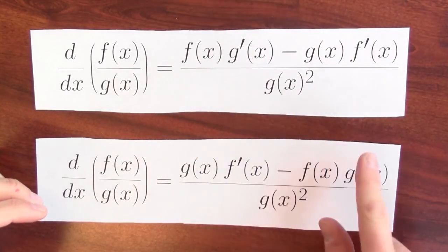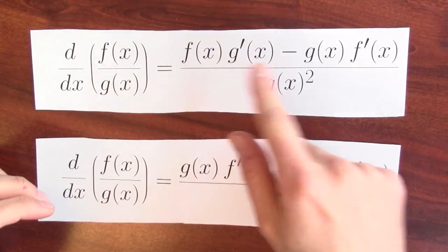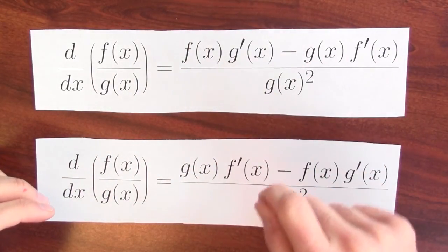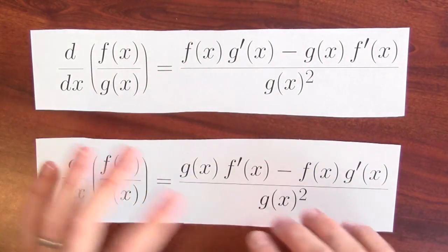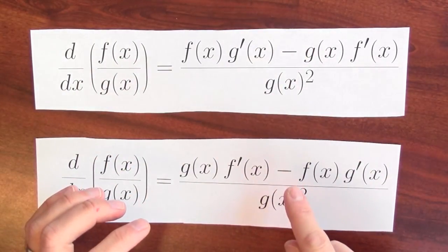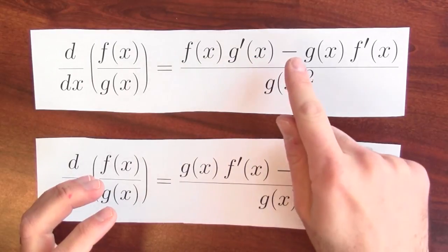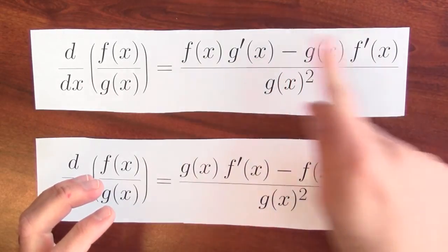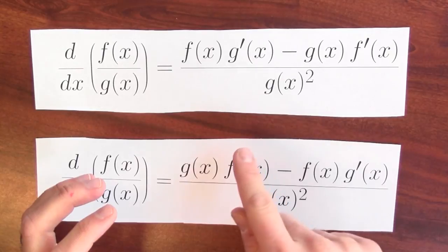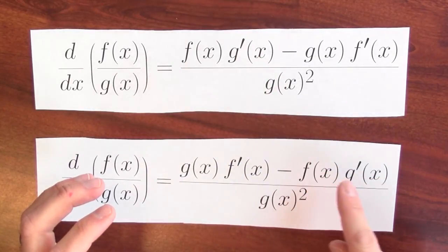You'll remember the numerator looks a little bit like the product rule — it's a value times a derivative minus the other value times the other derivative. But you might not remember exactly where the minus sign goes. You don't know if it's f(x)·g'(x) minus g(x)·f'(x), or the other way around: g(x)·f'(x) minus f(x)·g'(x).